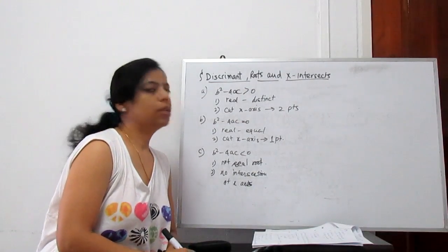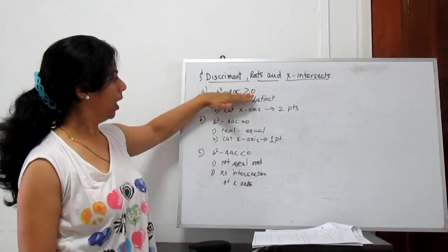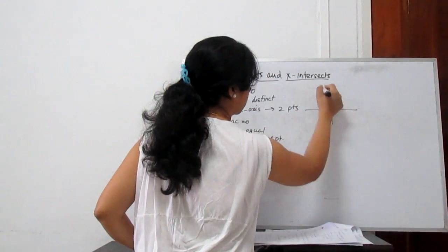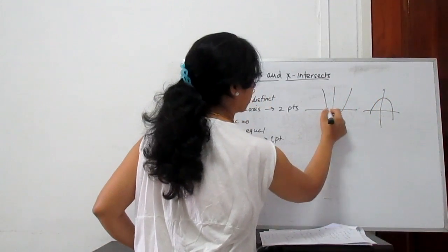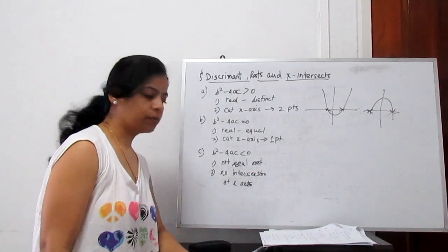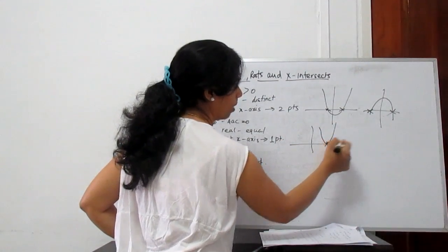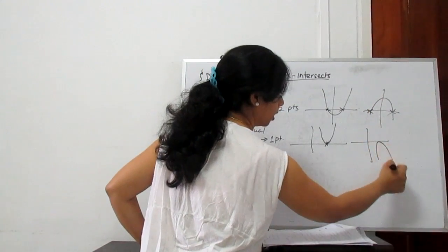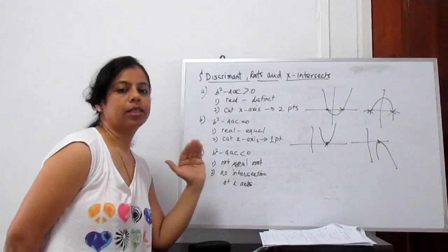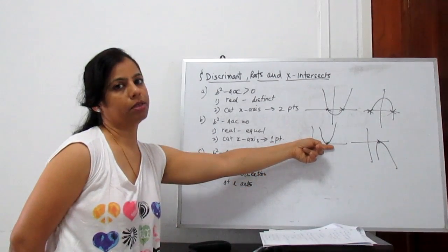Again, about the discriminant: if B² − 4AC is positive (greater than 0), the parabola cuts the x-axis at two points — it might open upward or downward but always cuts at two points. If B² − 4AC = 0, it only touches the x-axis at one point — meaning the x-axis is a tangent to the parabola. Tangent means any line that touches a curve at exactly one point.